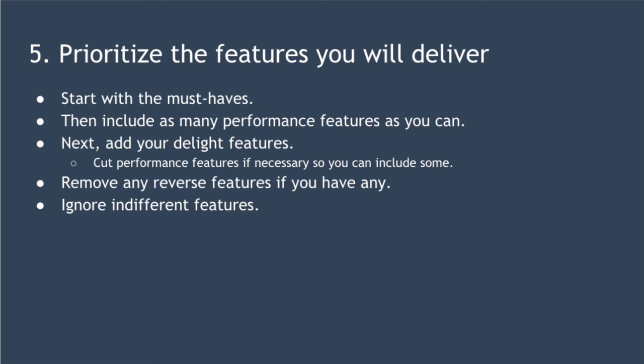The final step is to prioritize the features you will deliver. Begin by committing to deliver the must-have features — your customers expect to see these and will be disappointed if they're not present, so you must build them first. Next, look at your performance features and try to include as many as you can. Then try to include features that will add delight. If necessary, you can cut some performance features to include some delighters. From our example, that would mean scheduling features two and one next, time permitting. Finally, remove any reverse features if you have any, and ignore all indifferent features as they deliver no value to your customer.